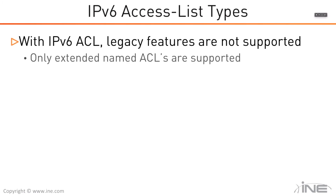When Cisco implemented IPv6 ACLs, legacy features were not migrated. They implemented support only for extended named access lists for IPv6 — eliminating legacy numbered ACLs and legacy standard ACLs — focusing on what is usable and forward-looking.